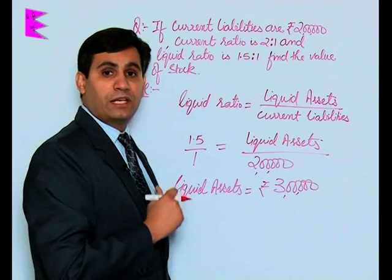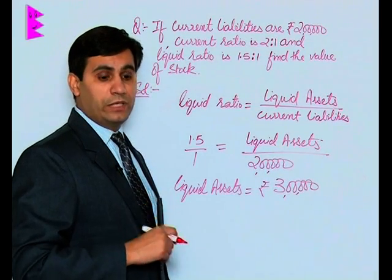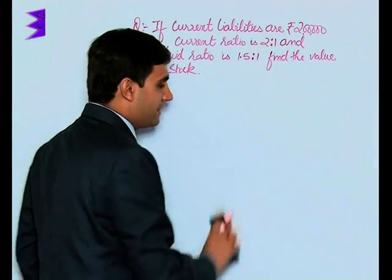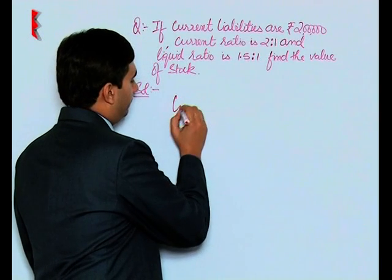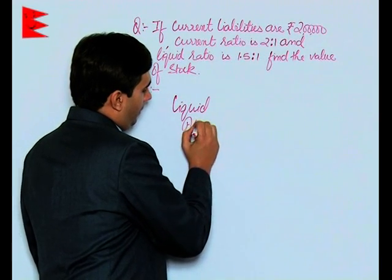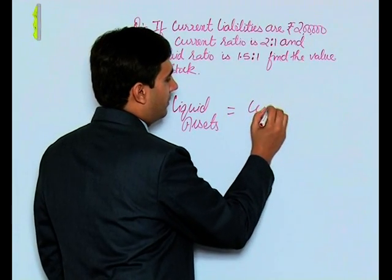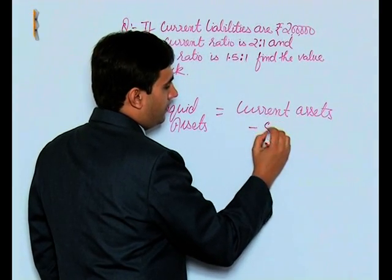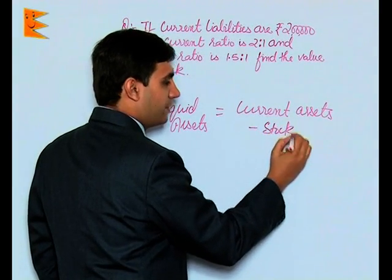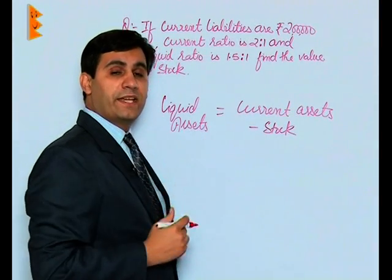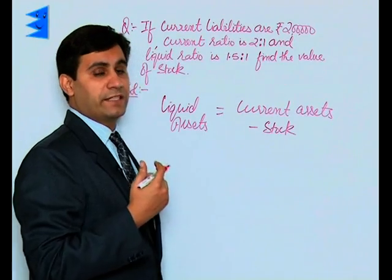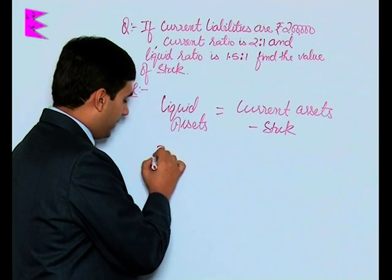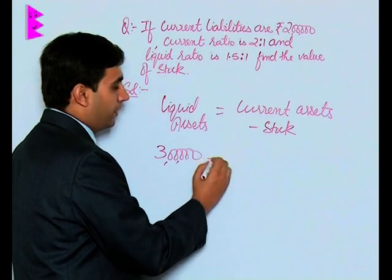What we have got is current assets worth rupees 4 lakh and liquid assets worth rupees 3 lakh. Now let us come to the formula for liquid assets. Liquid assets are equal to current assets minus stock or inventories minus prepaid expenses. But in this case there is no mention of prepaid expenses, so that will be assumed to be zero.